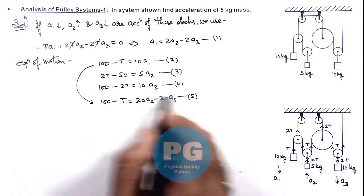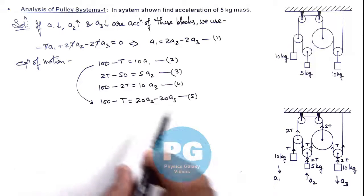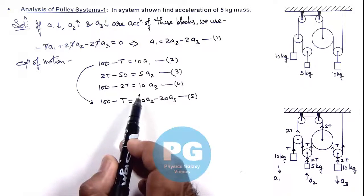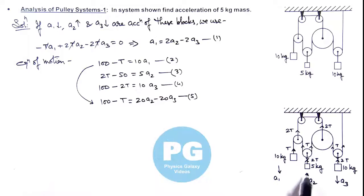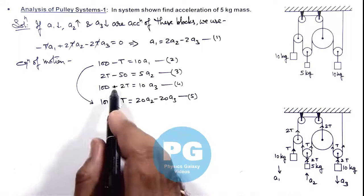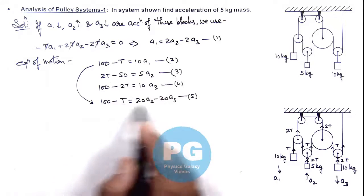Now, we need to calculate the value of a_y2 because we are required to find the acceleration of the 5 kg mass. From equations 3, 4, and 5, we will eliminate T and a_y3 to calculate a_y2.